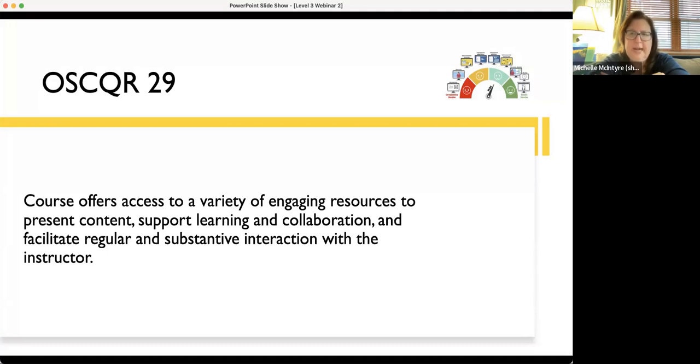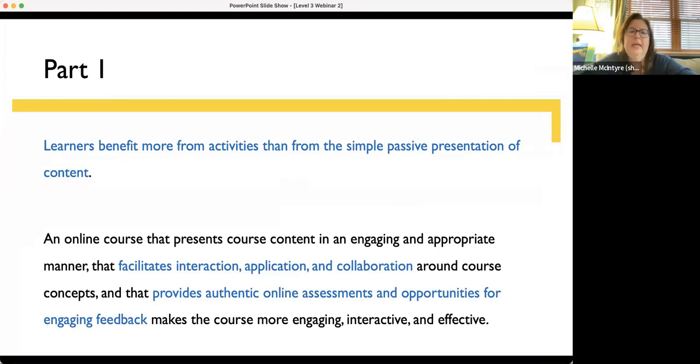The first one is OSCQR 29. It's RSI required. Courses offer access to a variety of engaging resources to present content, support learning and collaboration, and facilitate regular and substantive interactions with instructor. What that means is that learners benefit more from activities than from simple passive presentations. They want to see engaging content that's appropriate, that facilitates interaction, application, and collaboration. Basically, it's not enough to just do instructor-to-student interaction in the course. Collaboration and application are a foundational principle in online learning that needs to occur. It provides authentic online assessments and opportunities for engaging feedback, which makes everything more engaging for students.